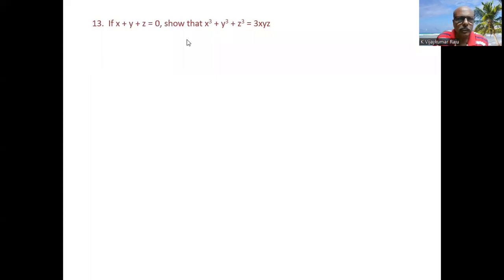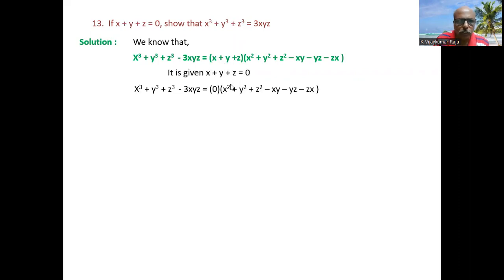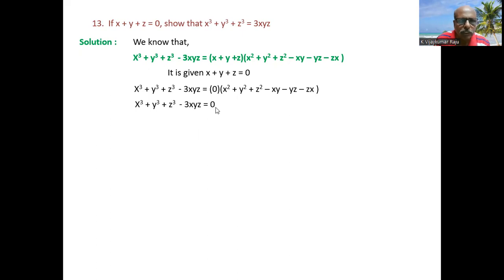Question 13: given x+y+z=0, show x³+y³+z³=3xyz. Using the identity x³+y³+z³-3xyz = (x+y+z)(x²+y²+z²-xy-yz-zx). Since x+y+z=0, the right side becomes 0·(...)=0. Therefore x³+y³+z³-3xyz=0, which means x³+y³+z³=3xyz.